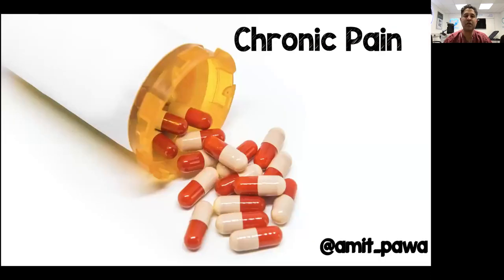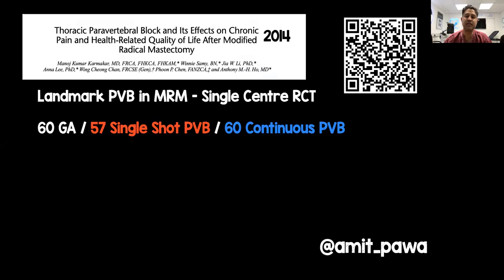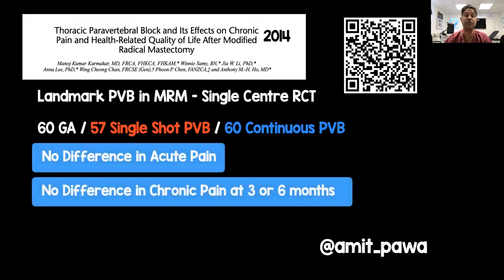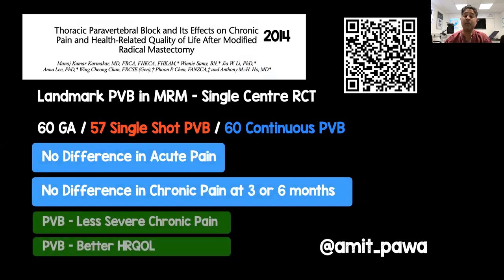Looking at chronic pain — this 2014 paper upset me greatly because it was the first I had seen suggesting paravertebral blocks weren't so great for chronic pain. Looking at three groups having GA, single-shot, or continuous paravertebral blocks, they demonstrated no difference in acute or chronic pain. Both groups received morphine, however, which may have clouded the situation. What they did notice was that paravertebral blocks were associated with less severe chronic pain and a better health-related quality of life.